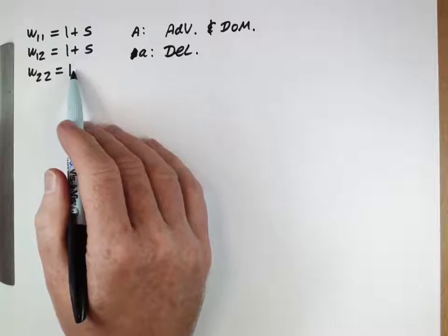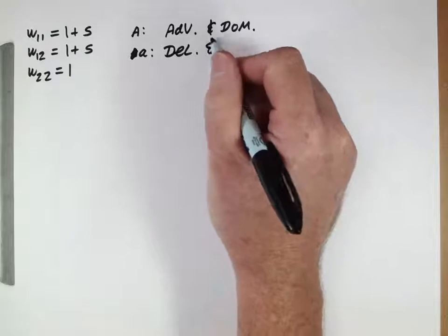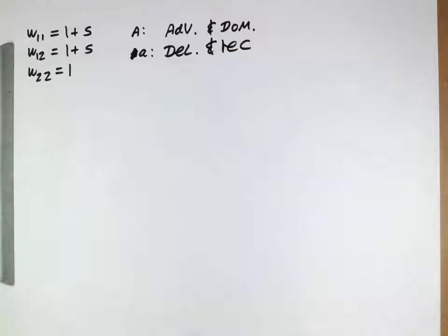When you require two copies of an allele to see the phenotype, that's when we would describe it as being recessive.